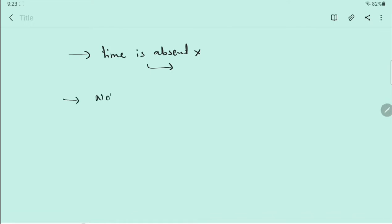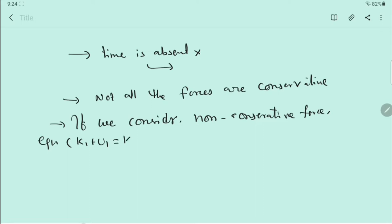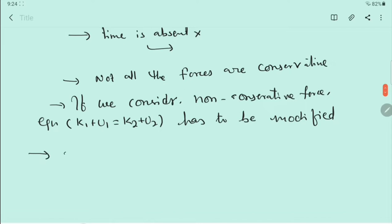Not all forces are conservative. There are some non-conservative forces as well. If we consider a non-conservative force exists, the equation K1 + U1 = K2 + U2 has to be modified. Also, at x equal to 0, we had seen that potential energy U is equal to 0.